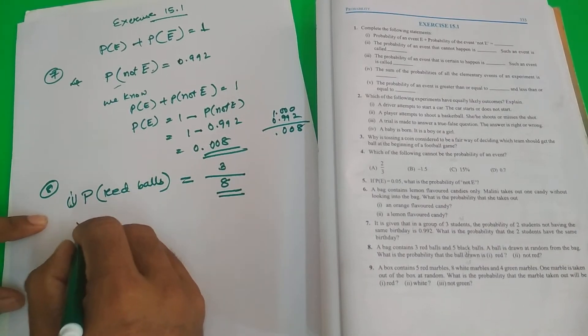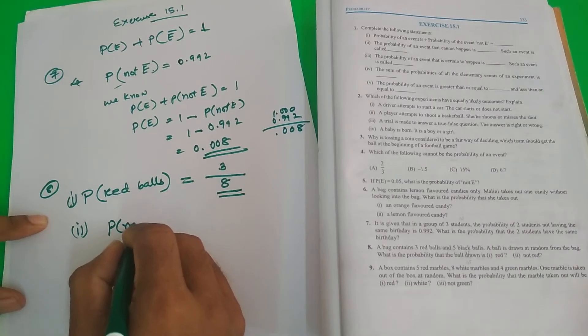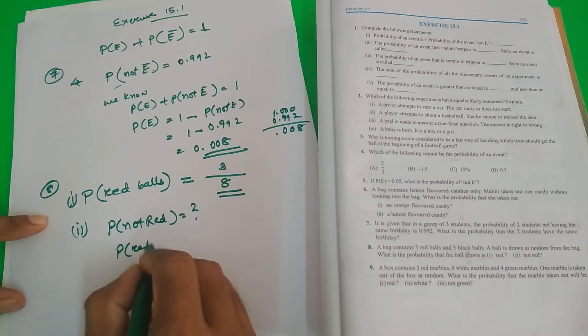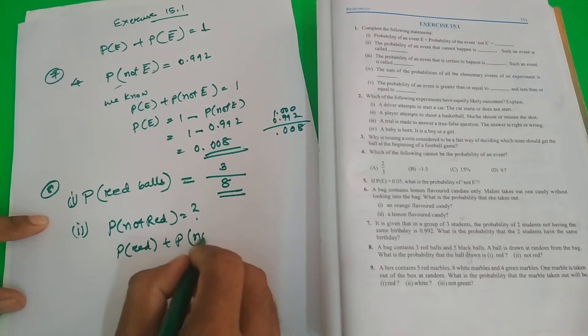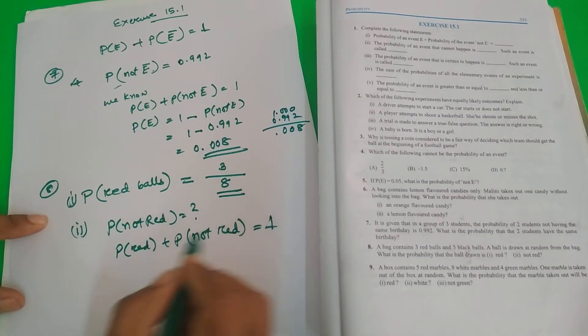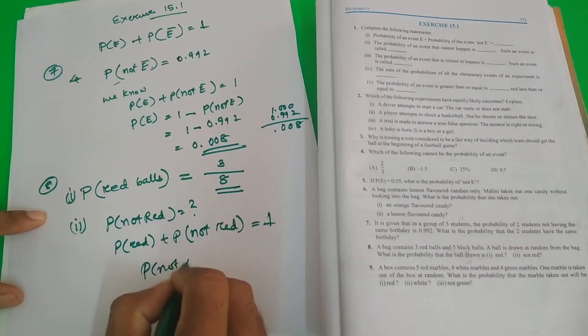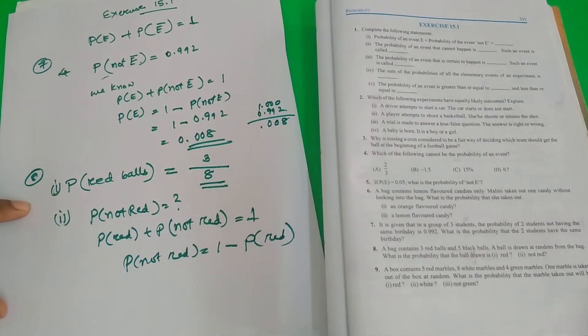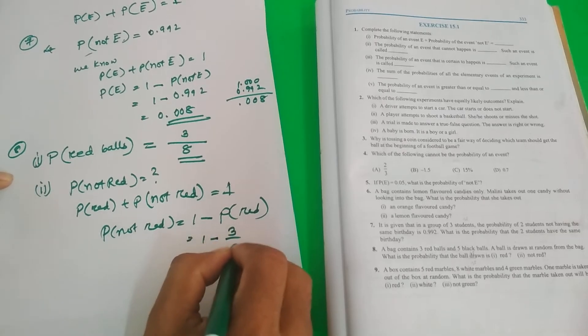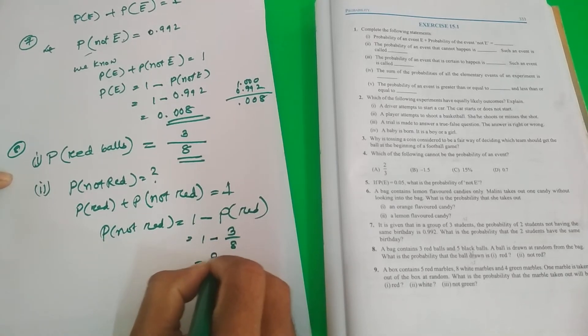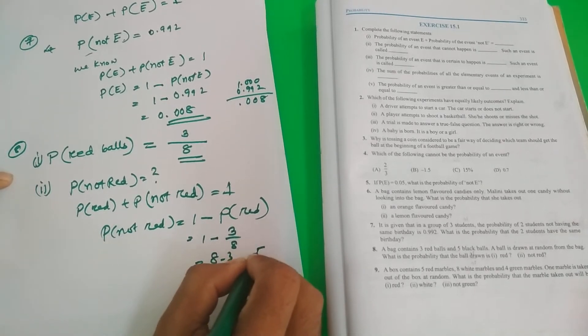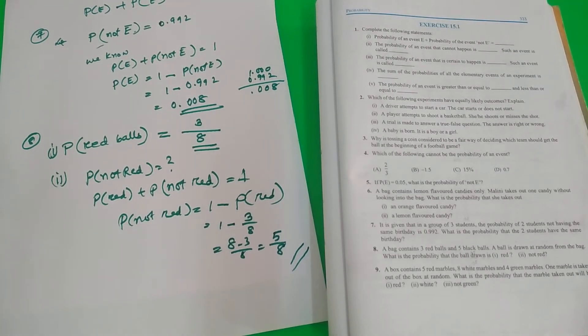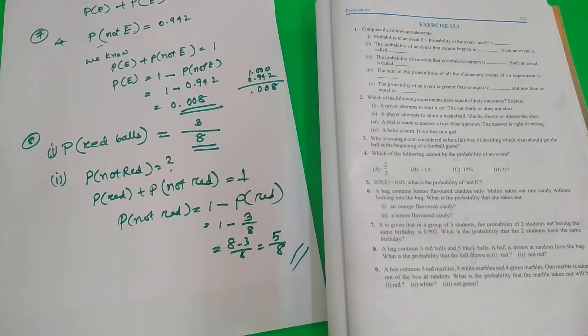And what is the probability of not red? Probability of not red. We need to find it out. Probability of red plus probability of not red equal to 1. Probability of not red equal to 1 minus probability of red. Very simple. Equal to 1 minus 3 by 8. This is 8 minus 3 by 8 equal to 5 by 8. This is what question number 8 says. Very simple questions.